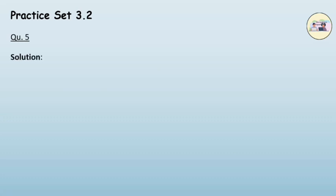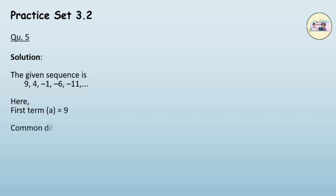Solution. The given sequence is 9, 4, minus 1, minus 6, minus 11. Here, first term a is 9. Common difference d is equal to 4 minus 9 which is minus 5.